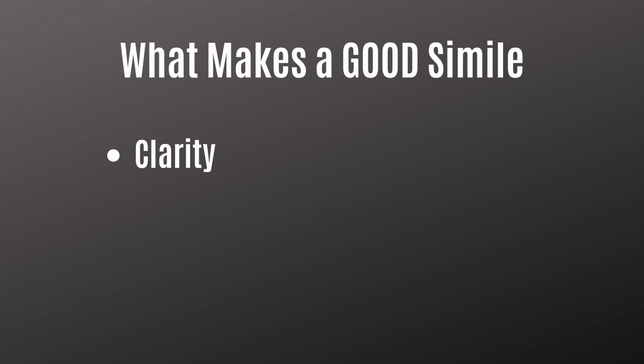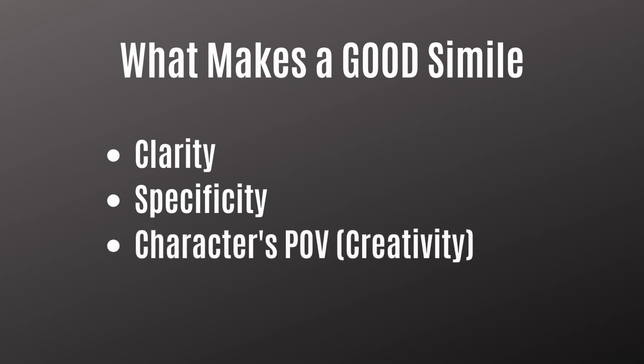The second thing that makes a good simile is specificity. Specificity is very important because if you have something more specific, it will have more impact. When you really want similes to leap off the page, you need to get specific with your details. And the third thing that makes a good simile is the character's point of view. Different characters come from different backgrounds and have different ways of perceiving the world, and how those characters perceive the world will often determine what kind of similes you can use in your story.